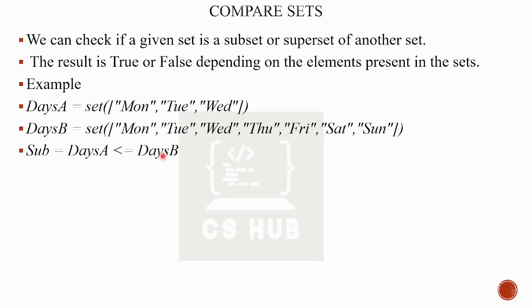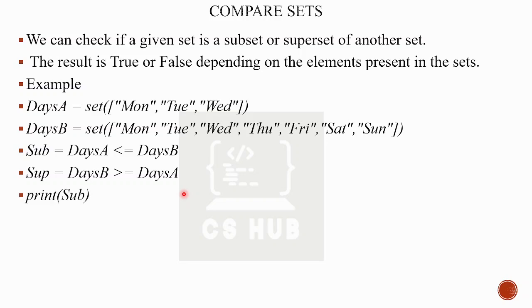Comparing sets: subset is days_A <= days_B, which returns True. Superset is days_B >= days_A, which also returns True. So days_A is a subset — less than or equal — and days_B is the superset — greater than or equal. This is the comparison of sets.